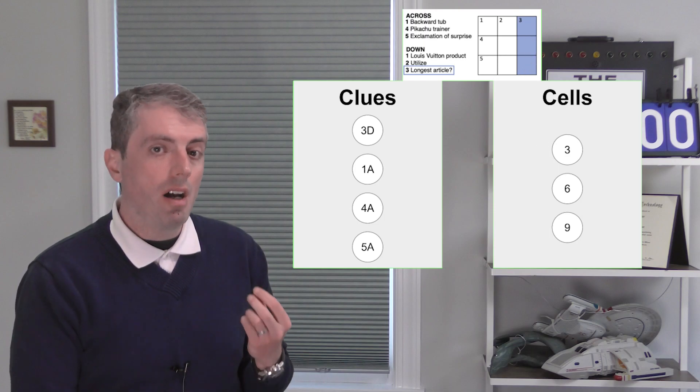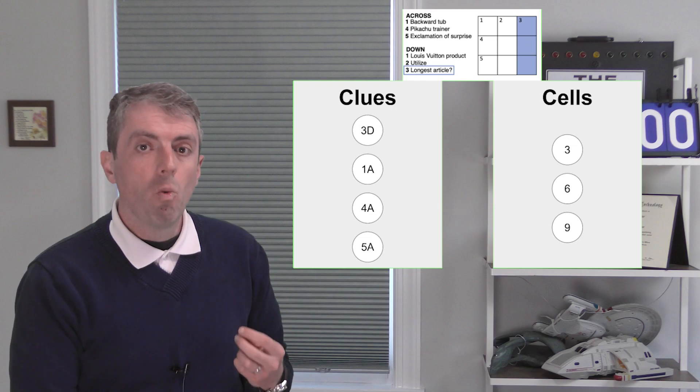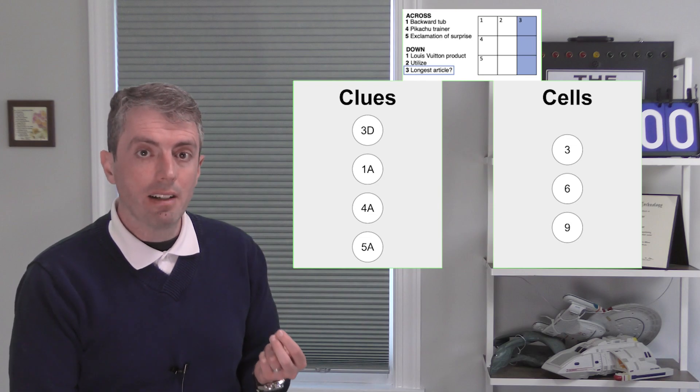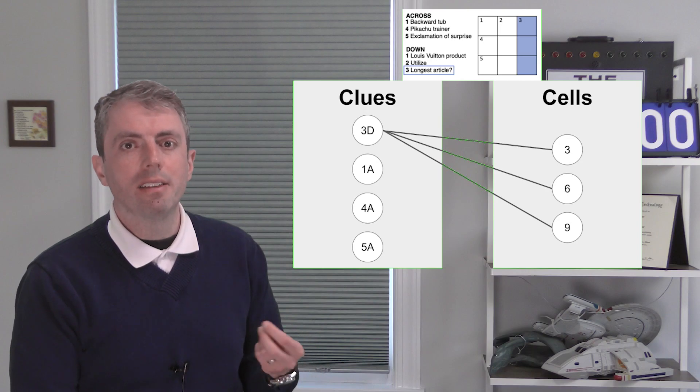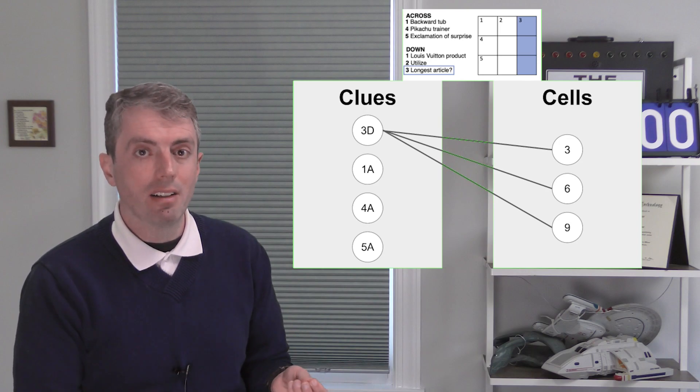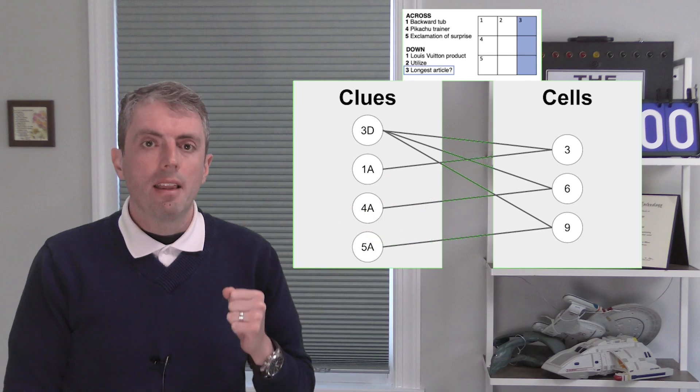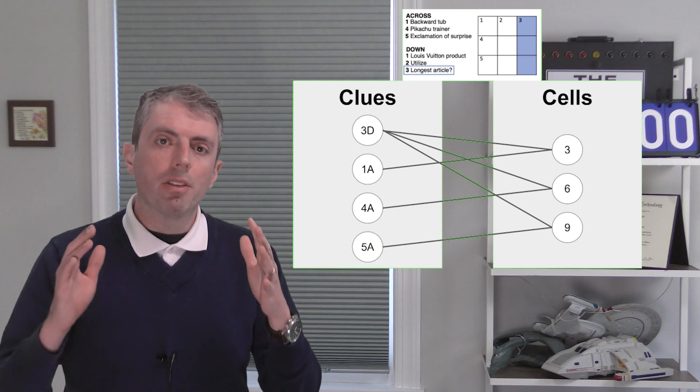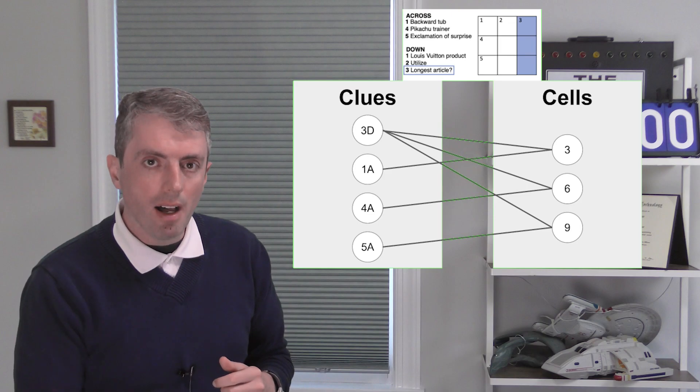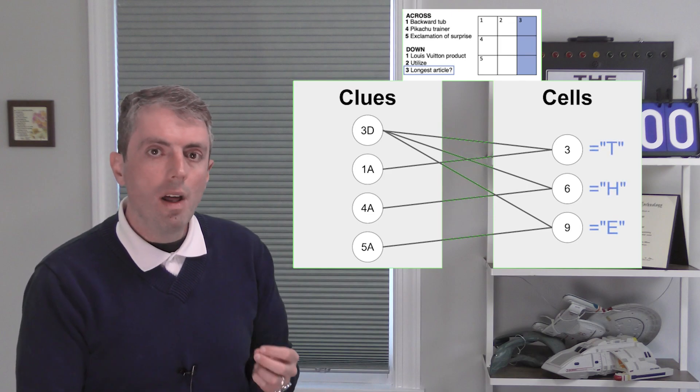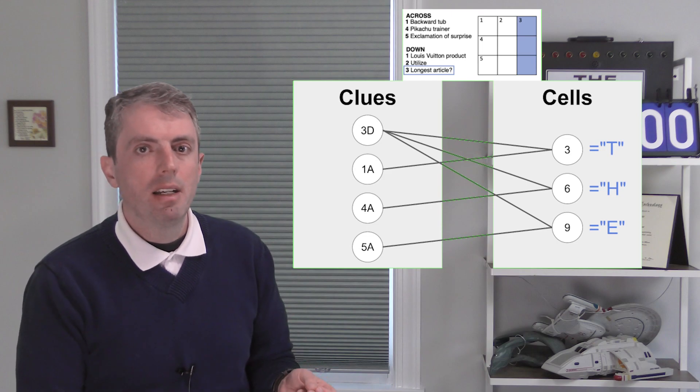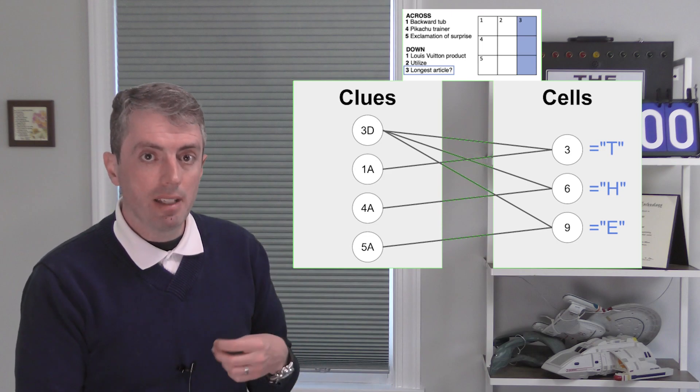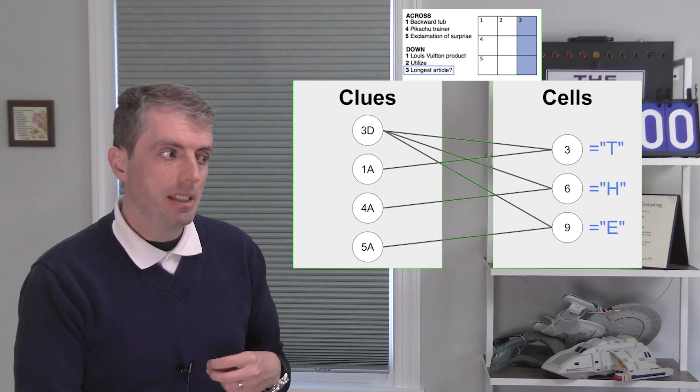So now the next thing to do is connect up the cells and clues. 3 down covers all of the cells. 1 across's last character hits cell 3, 4 across's last character hits cell 6, and 5 across's last character hits cell 9. Now we've drawn those lines. This encodes that if you make 3 down THE, then 1 across can be THAT but not EBB, because cell 3 cannot be assigned to both T and B.